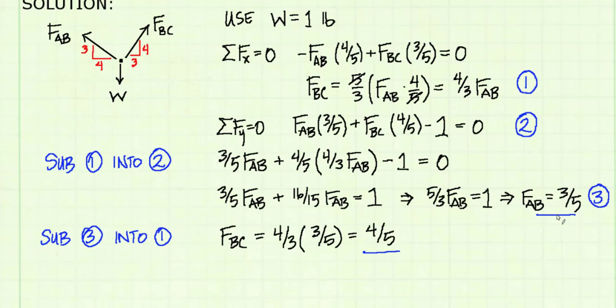That means if the weight W is one pound, the force in cable BC is going to be higher than cable AB. And now if I scale up that load, cable BC is going to be the first one that gets to the maximum limit of 1200 pounds.